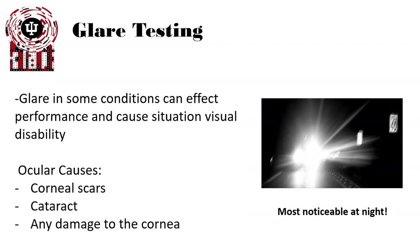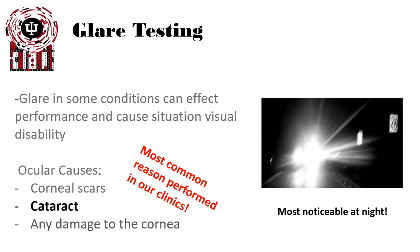Glare in some conditions can affect performance and cause situational visual disability. Some common ocular causes are corneal scars, cataracts, any damage to the cornea, as well as diseases like keratoconus and dystrophy. The most common type we see and most common complaint about glare and its effects in daily life is due to cataracts.